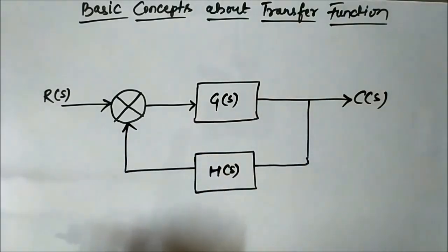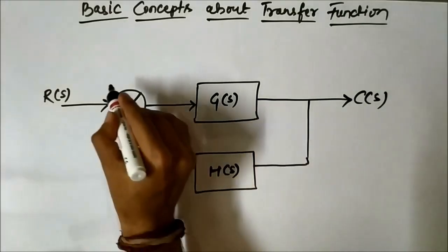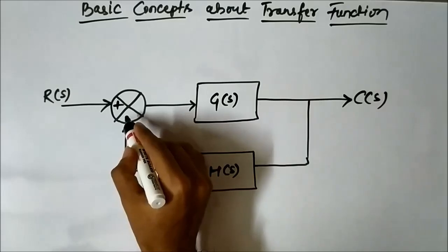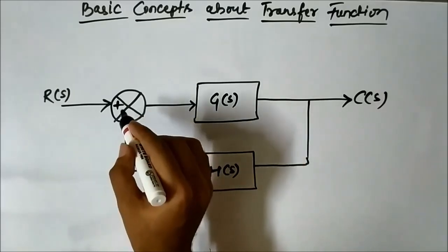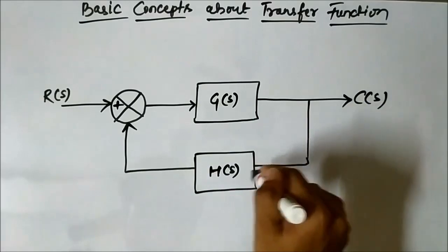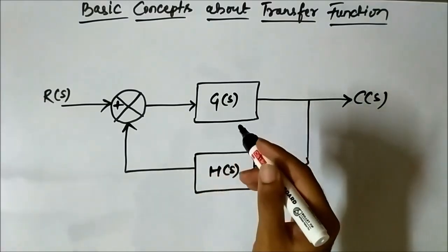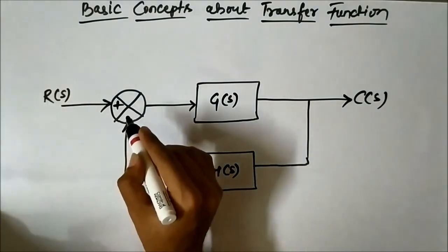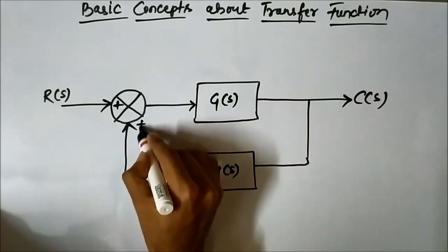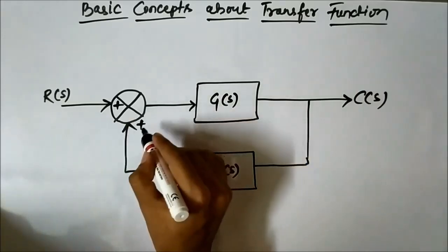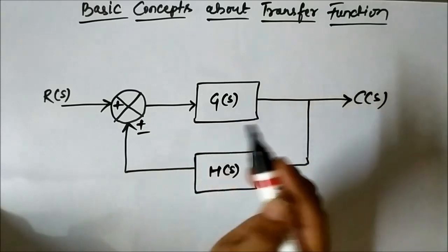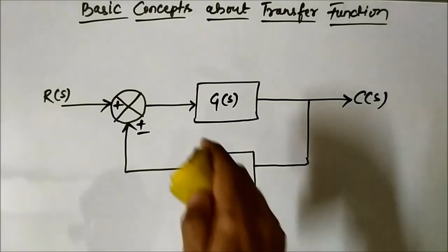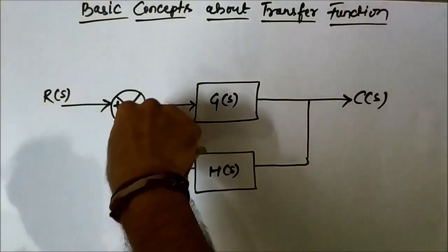This feedback element provides a feedback connection. The sign at the summer — whether it is plus or minus — determines whether the feedback connection is a positive feedback or negative feedback. If it is plus, it is a positive feedback connection, and if it is minus, it is a negative feedback connection. So it can be either plus or minus.